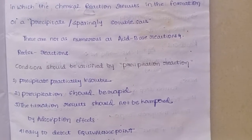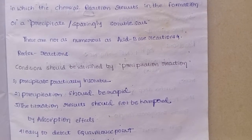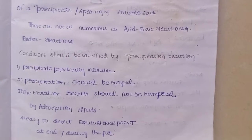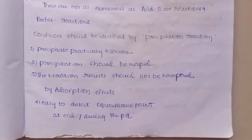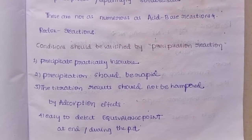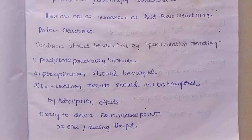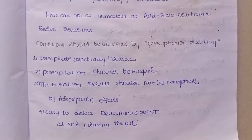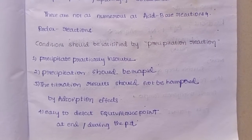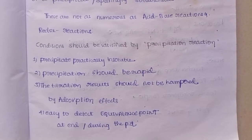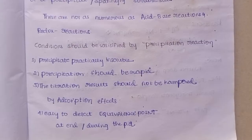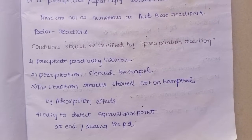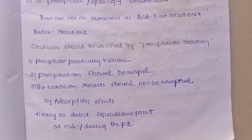These precipitation reactions are not as numerous as acid-base reactions and redox reactions. Certain conditions should be satisfied by precipitation reactions. The precipitate should be practically insoluble. The precipitation should be rapid. The titration results should not be hampered by absorption effects, and it should be easy to detect the equivalent point or end point during the precipitation reaction.